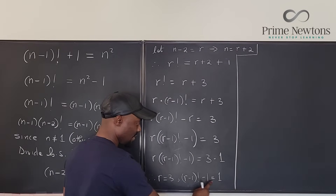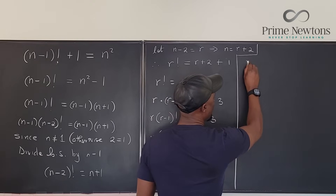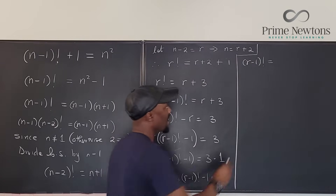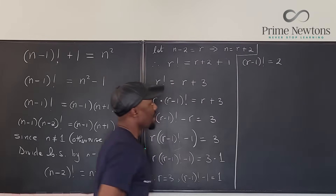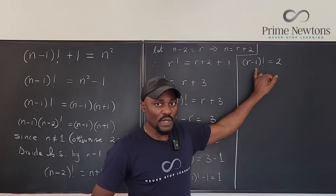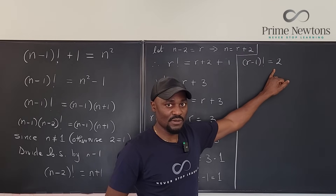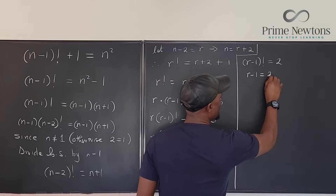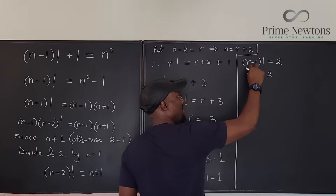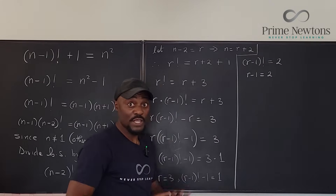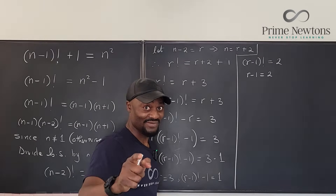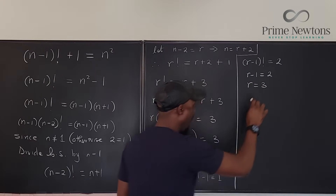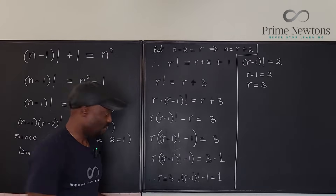If r=3, then (r-1) factorial minus 1 = 1, so (r-1) factorial = 2. The only number whose factorial equals 2 is 2, so r-1 = 2, which means r = 3. This is consistent — our assumption r=3 is confirmed!